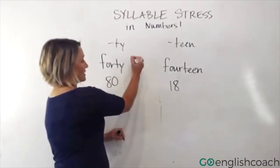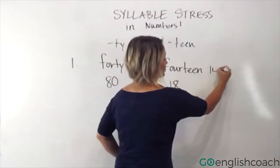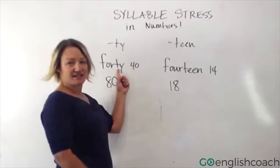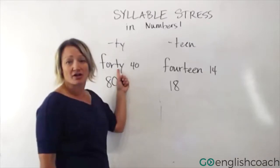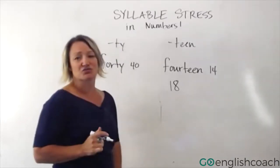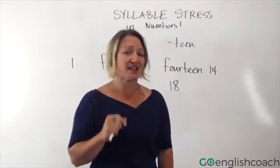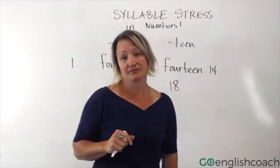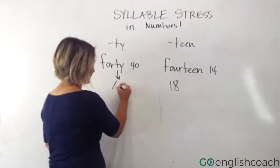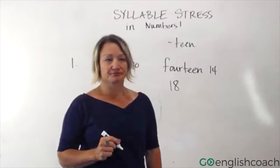So, this is 40. The first thing is that with the T sound in 40, in American English, we make that T sound a D. So you'll hear me say 'forty' — 'forty.' So this sounds like a D: 'forty.'